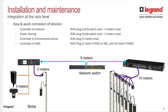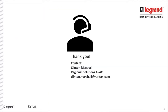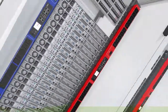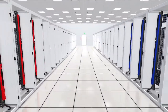When looking to deploy the Raritan asset management strip, there are some things to consider regarding distances. From an intelligent rack PDU controller inside the rack, you have about two meters of RJ45 or patch cables to connect the asset strip to the controller. If you're using an EMX, you have up to 10 meters from the sensor port to the asset strips.